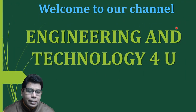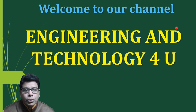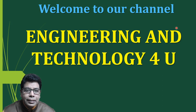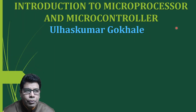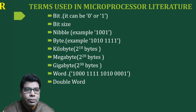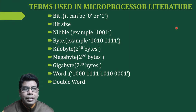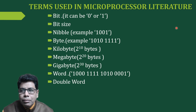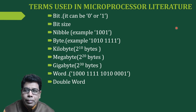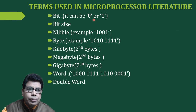Welcome to our channel Engineering and Technology for you. If you are not subscribed to our channel, kindly subscribe and press the bell icon. The topic for today is introduction to microprocessor and microcontroller. Let us start with the terms. The first term is bit. A bit is nothing but a digit of a binary number, and it can be 0 or 1. It will have two values: 0 or 1.